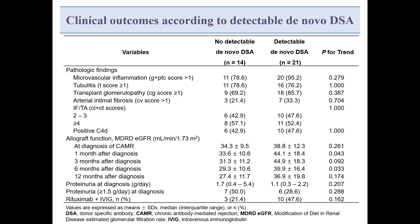There were no significant differences in the pathology findings between the two groups. At the time of diagnosis of CAMR, both groups had similar allograft function. However, from one month after diagnosis to 12 months, allograft function was lower in the no-detectable DSA group compared to the detectable DSA group. There were no significant differences in the amount of proteinuria at diagnosis and the proportion of proteinuria more than 1.5 g per day at diagnosis between the two groups.